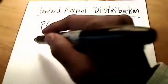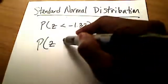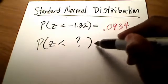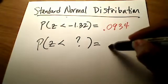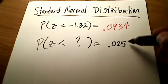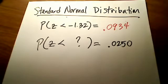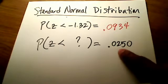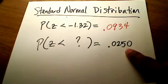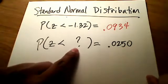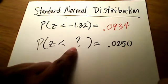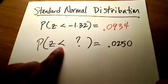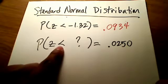What if this time I give you the probability and ask you what the corresponding z-score is? In other words, if I asked you to find the z-score that corresponds to 0.0250 — do you see that you're given the probability this time? I'm telling you what the area under the curve is, but I'm not telling you what the z-score is. That's what we have to find. What's also very important is the less than symbol sitting right here — it's pointing to the left.